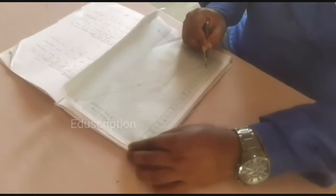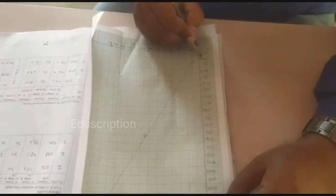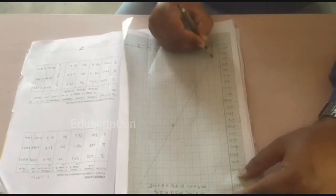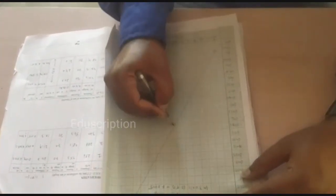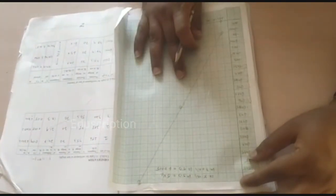So 0.04, then 0.0405, 0.041, 0.05. Then see here, 256 plot this point, 288 plot this point and 320 plot this point. Then add this and graph will be a straight line.